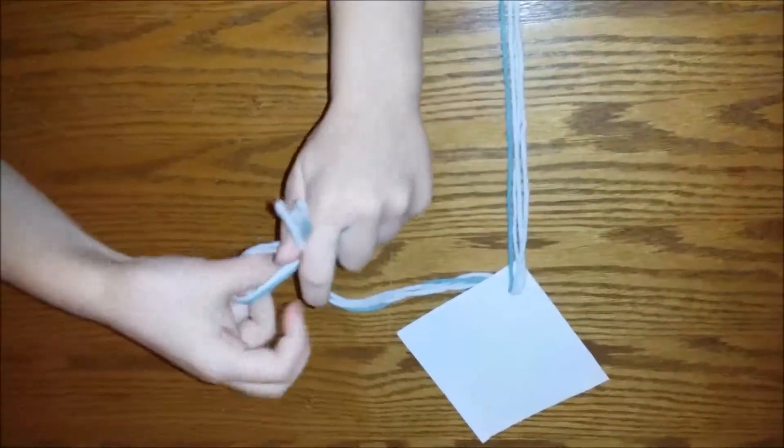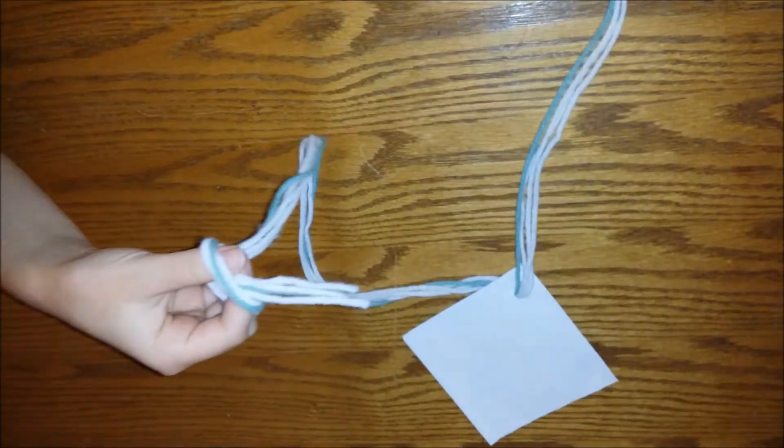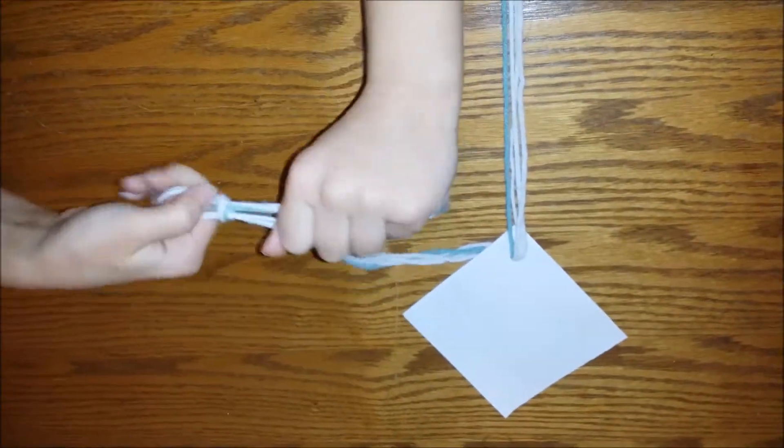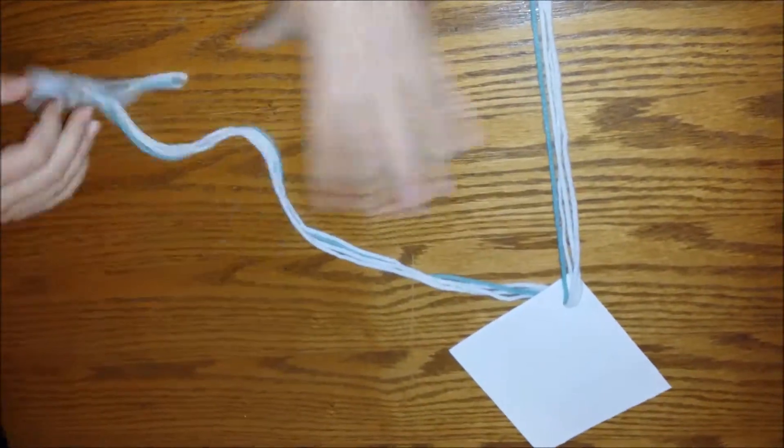The first thing you have to do is make a loop knot on the one that doesn't have a long string. This one has a long string, the one that doesn't have a long string, just because you want to make sure that it doesn't get mixed up.